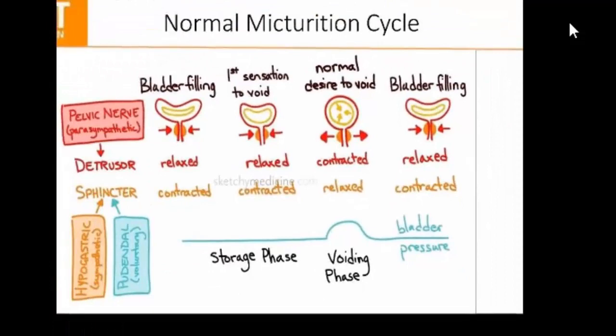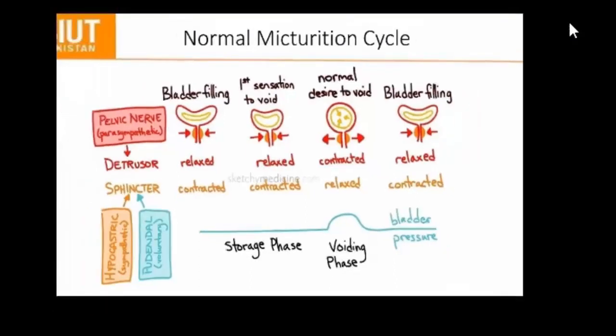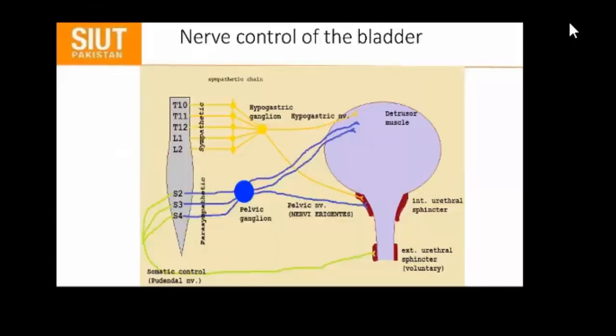The normal nerve supply is pelvic nerves with parasympathetics supplying the detrusor, and the sphincter has dual supply by the hypogastric sympathetic nerves. The sympathetic supply is from T10 to L2, and the parasympathetic supply is from S2, S3, and S4. S2, S3, and S4 also supply the external urethral sphincter via the pudendal nerve, allowing voluntary control.